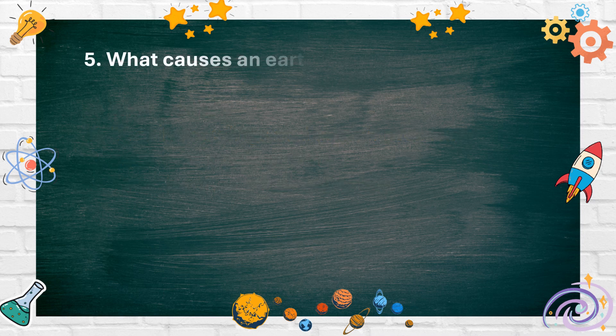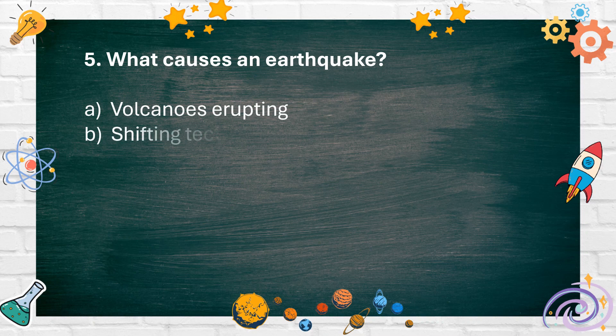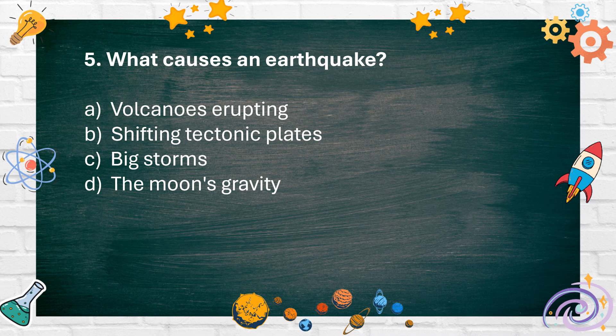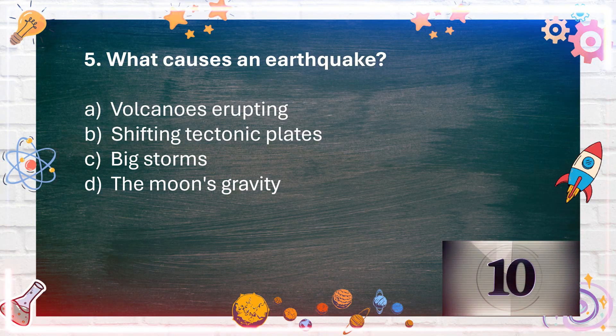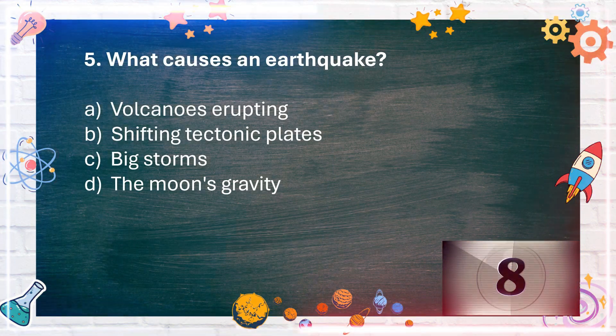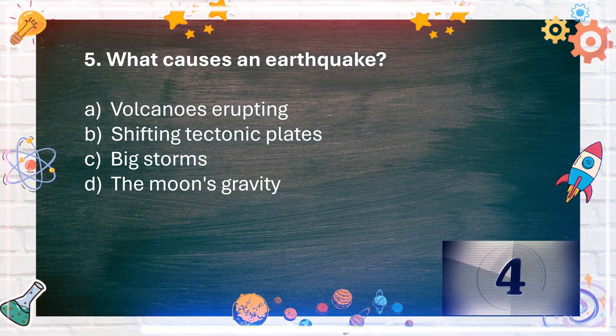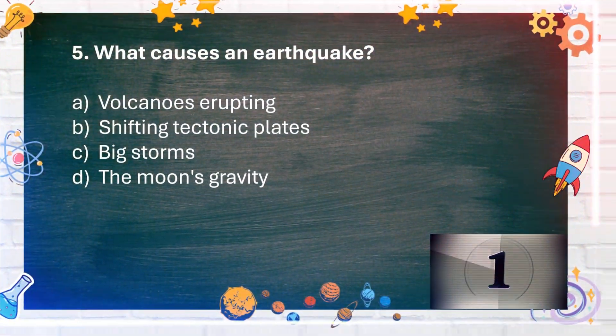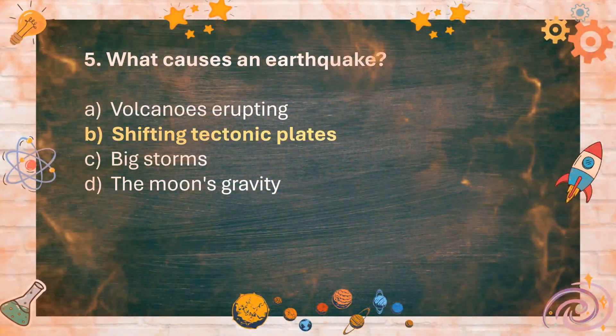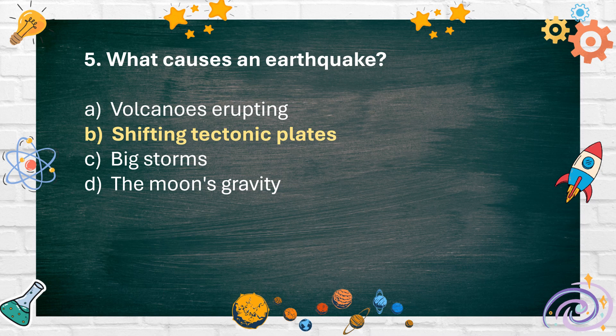Number 5: What causes an earthquake? A. Volcanoes erupting. B. Shifting tectonic plates. C. Big storms. D. The moon's gravity. The answer is B. Shifting tectonic plates.